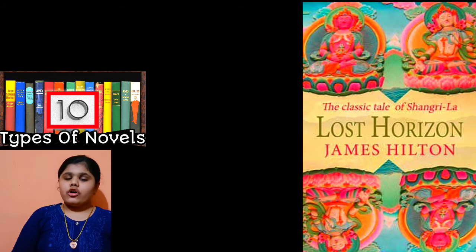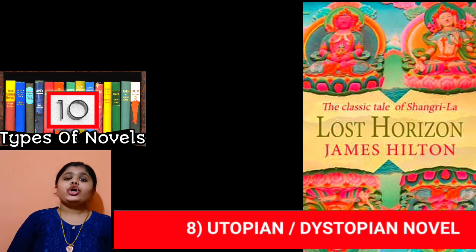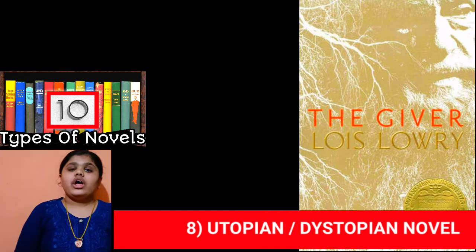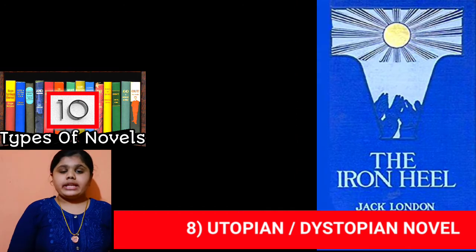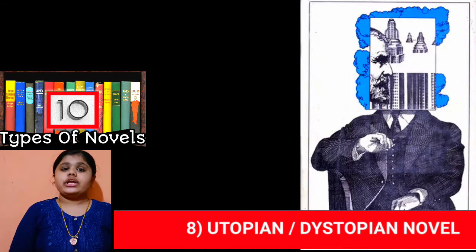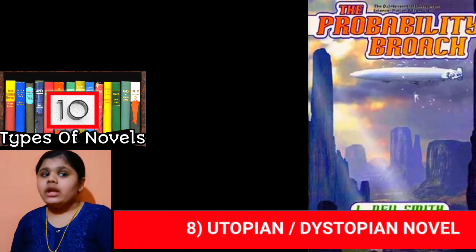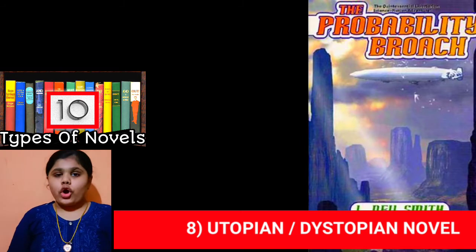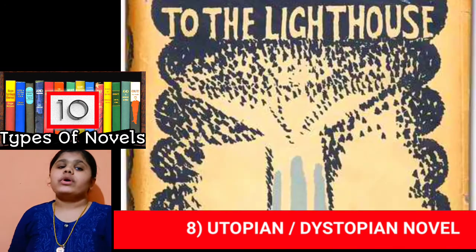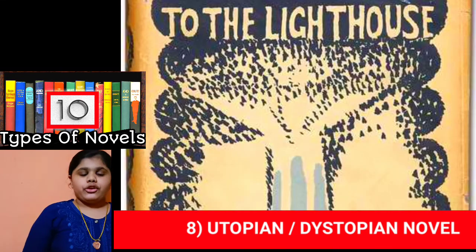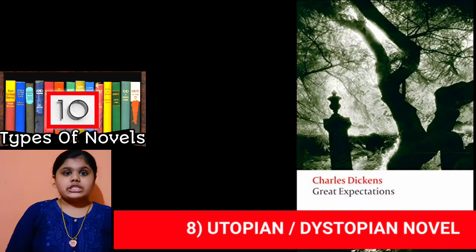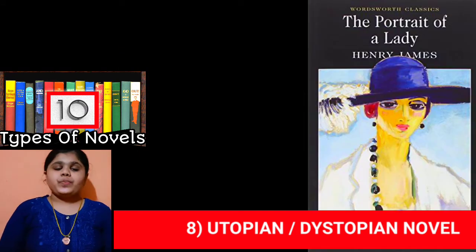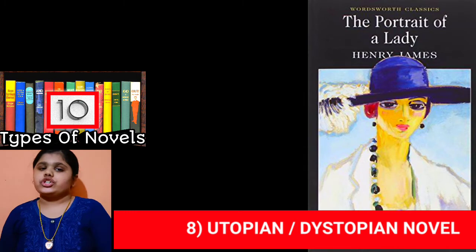The eighth type of novel is the utopian or dystopian novel. Utopia is an imaginary community or society possessing ideal qualities. It is a common literary theme, especially in science fiction or speculative fiction.